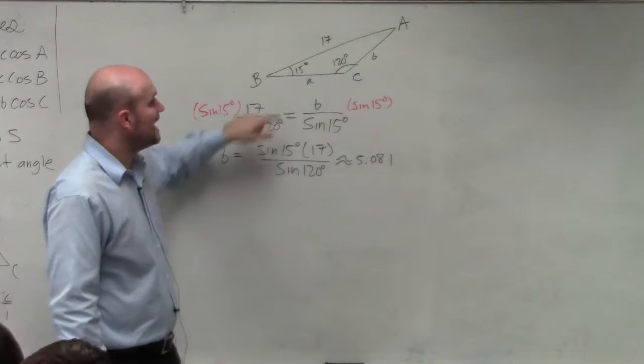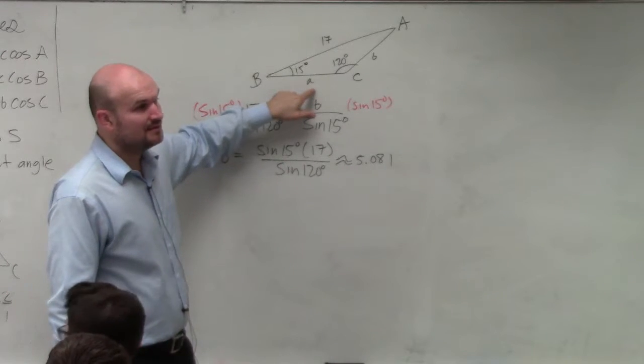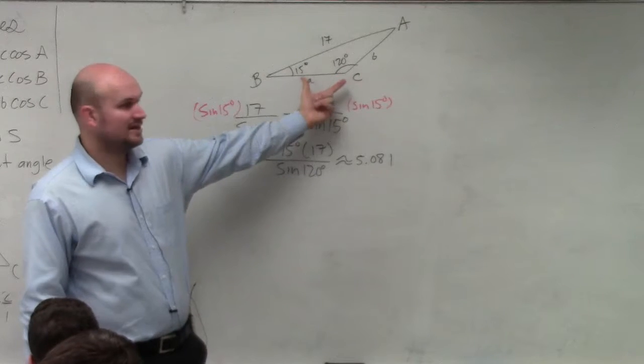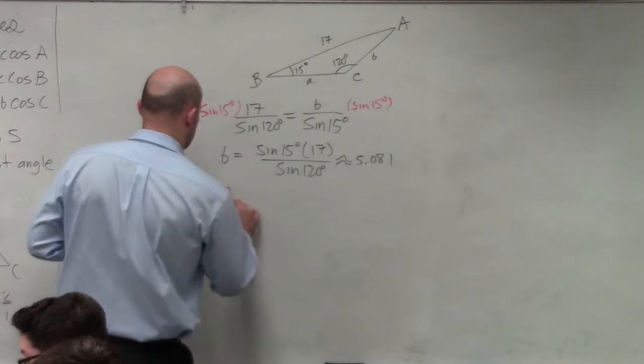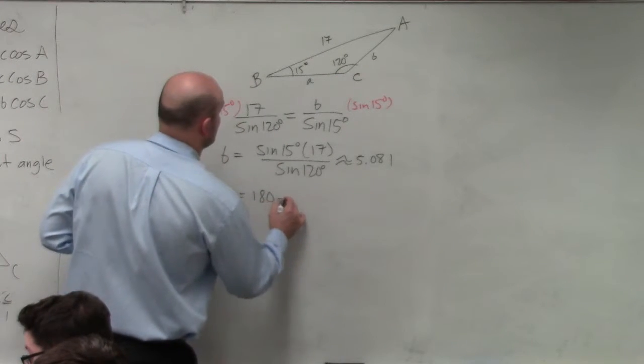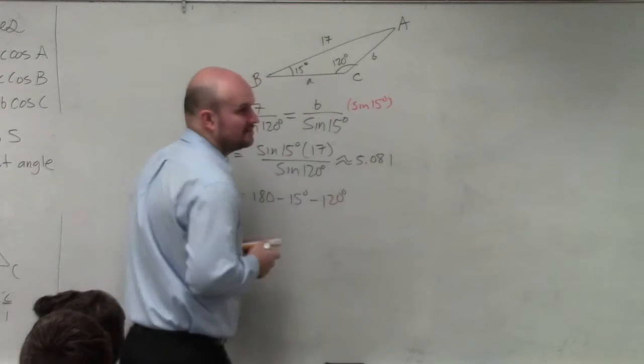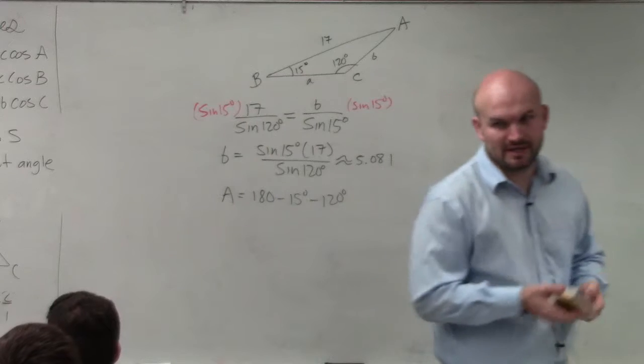And so now, I can solve for A. But the problem is, I don't know A, or big A, right? But I have two sides of a triangle. So I can find big A by just saying 180 minus 15 degrees minus 120 degrees, right? Because all the sides of a triangle add up to 180.